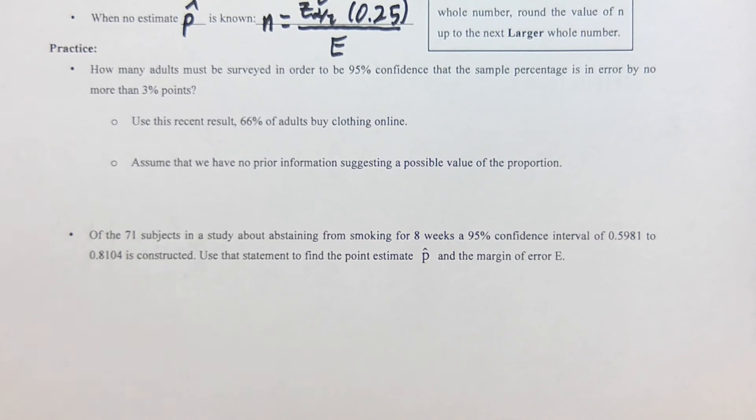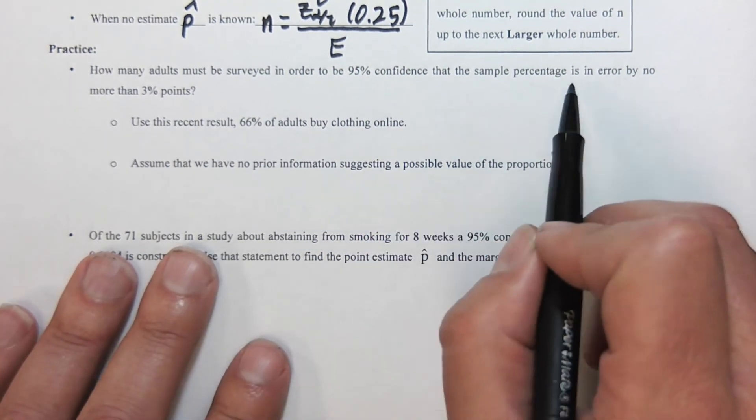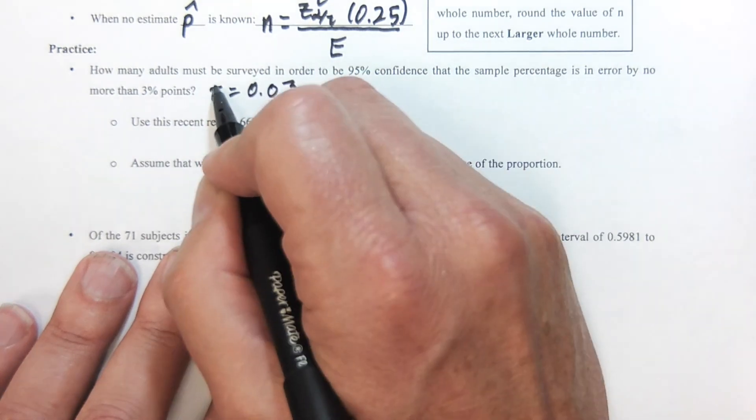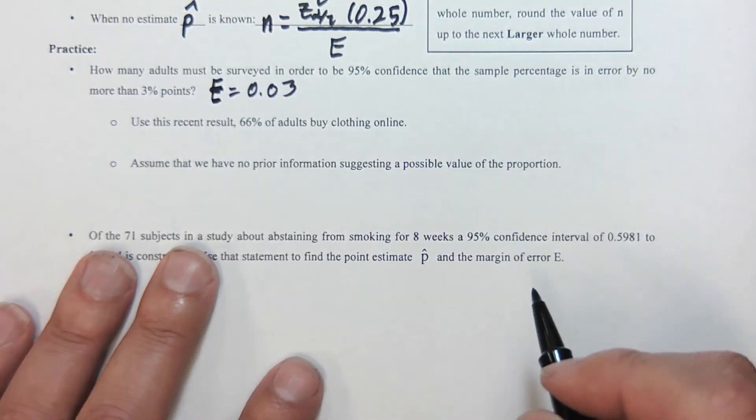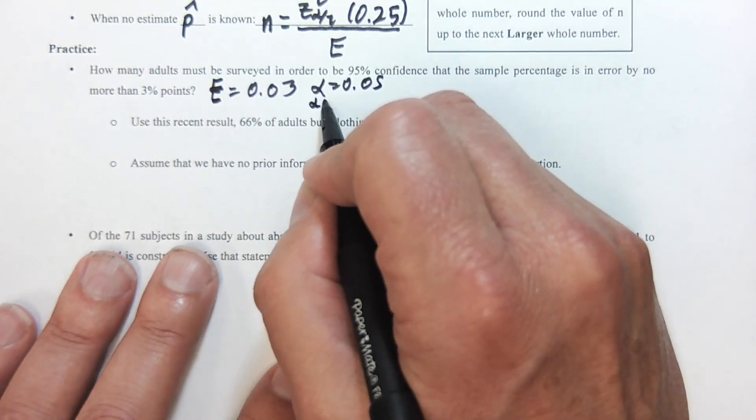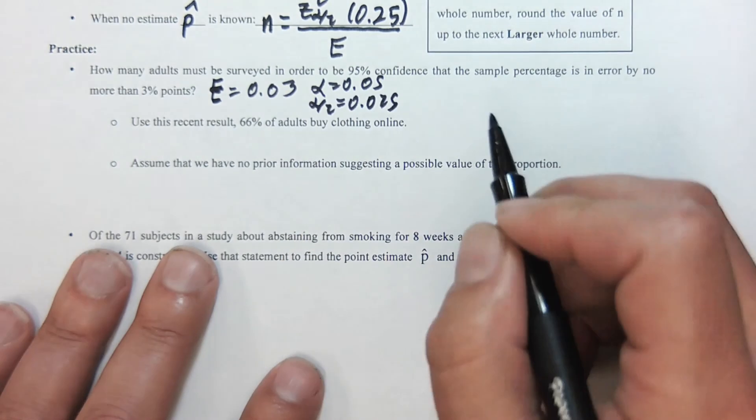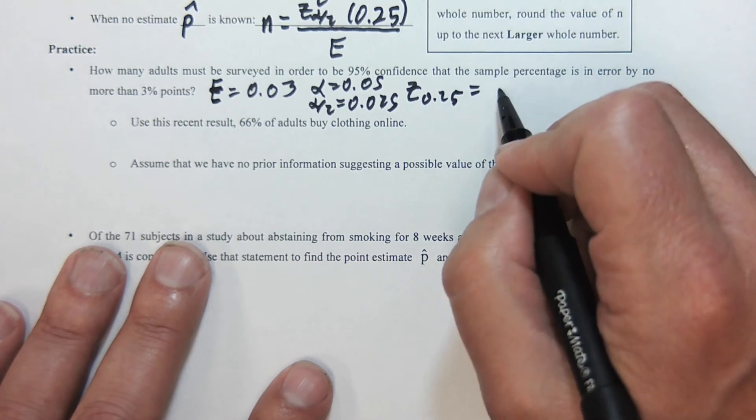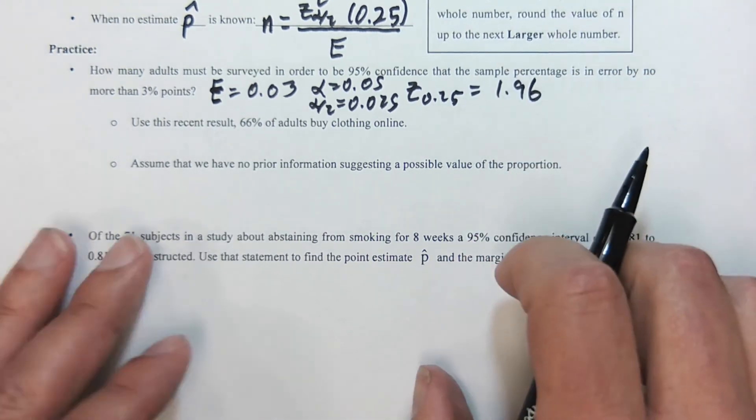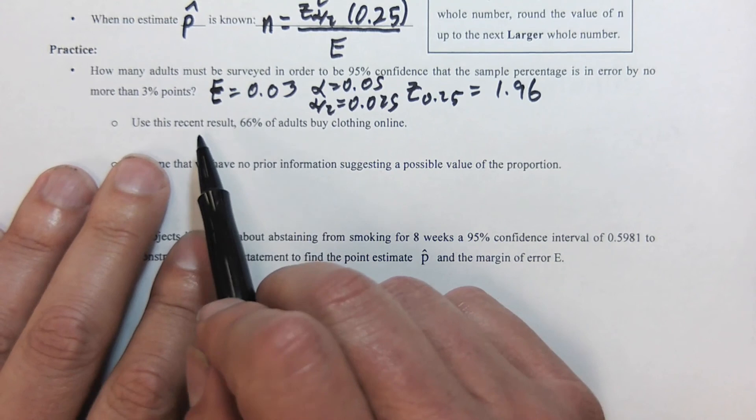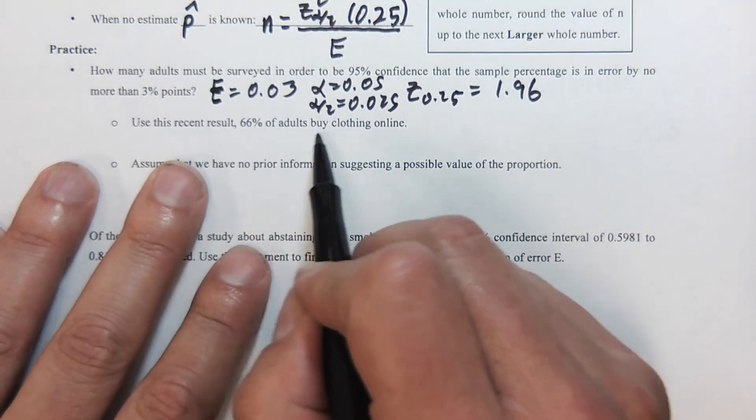How many adults must be surveyed in order to be 95% confident that the sample percentage is in error by no more than 0.03? So here e is 0.03, alpha is 0.05, which means alpha over 2 is 0.025. Z sub 0.025 once again is 1.96.